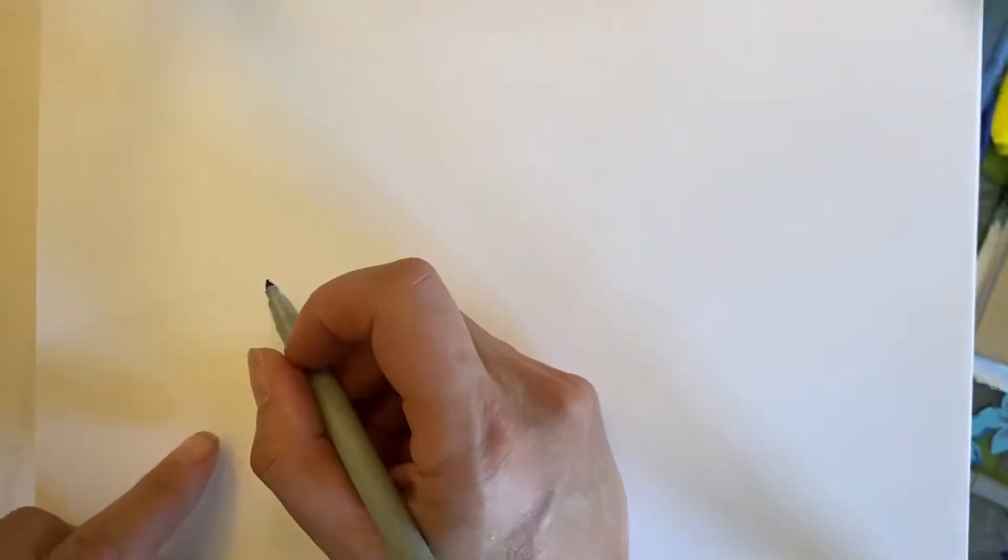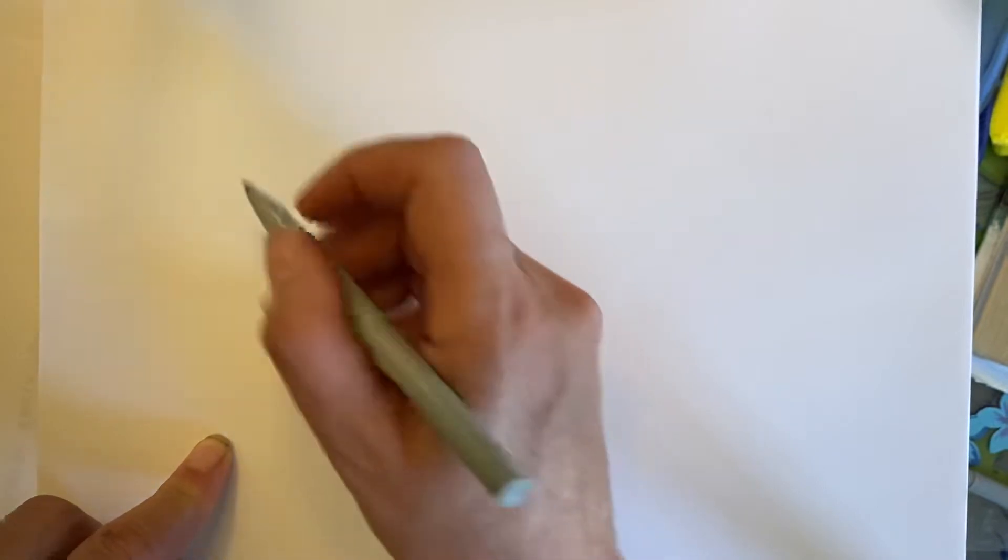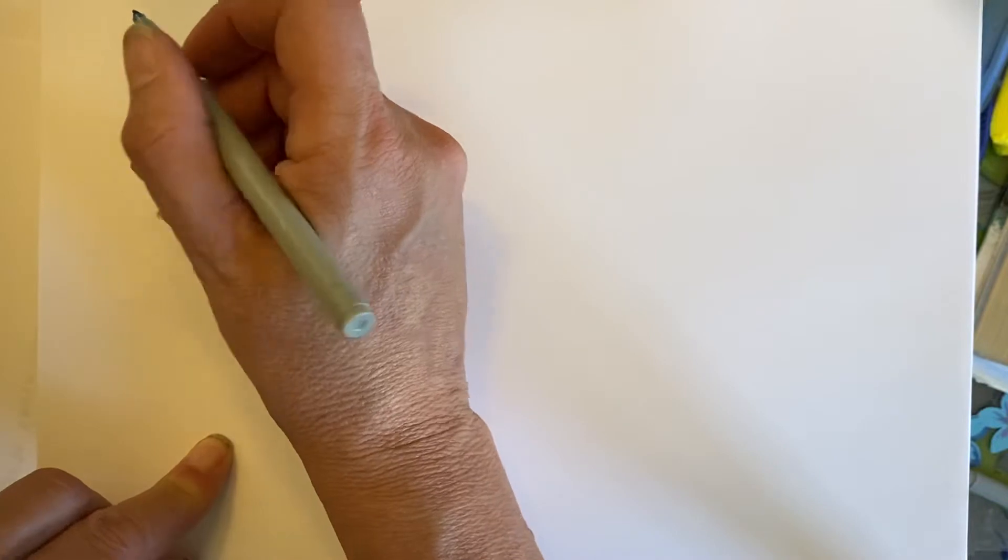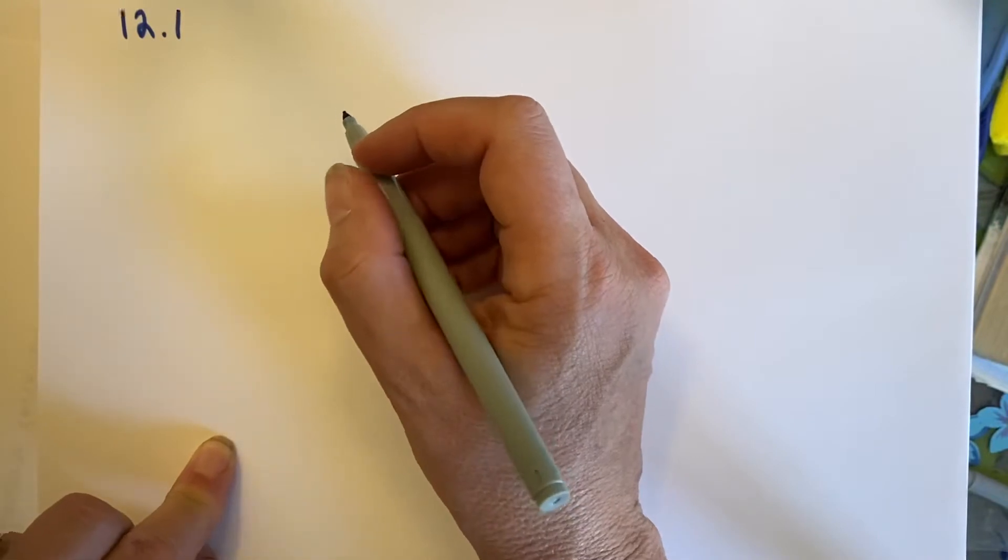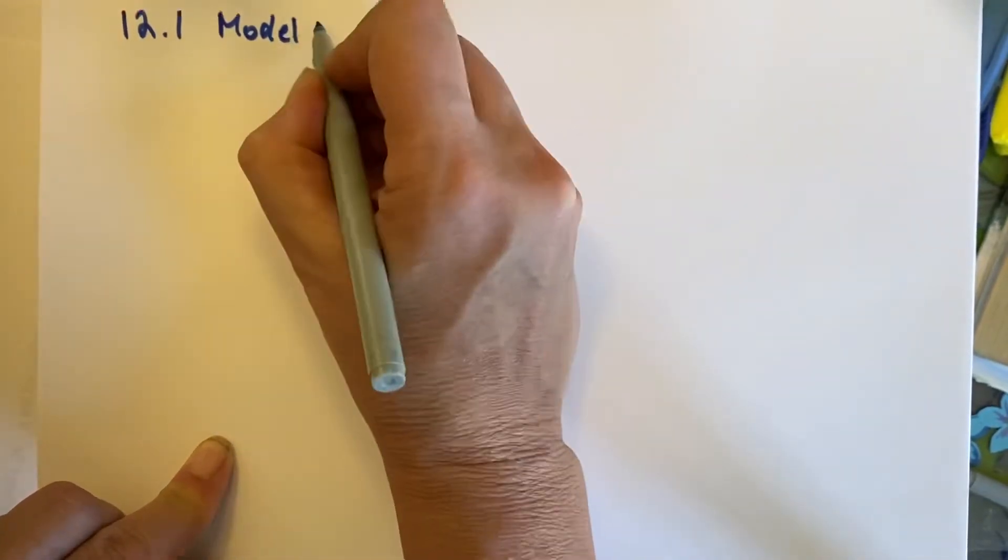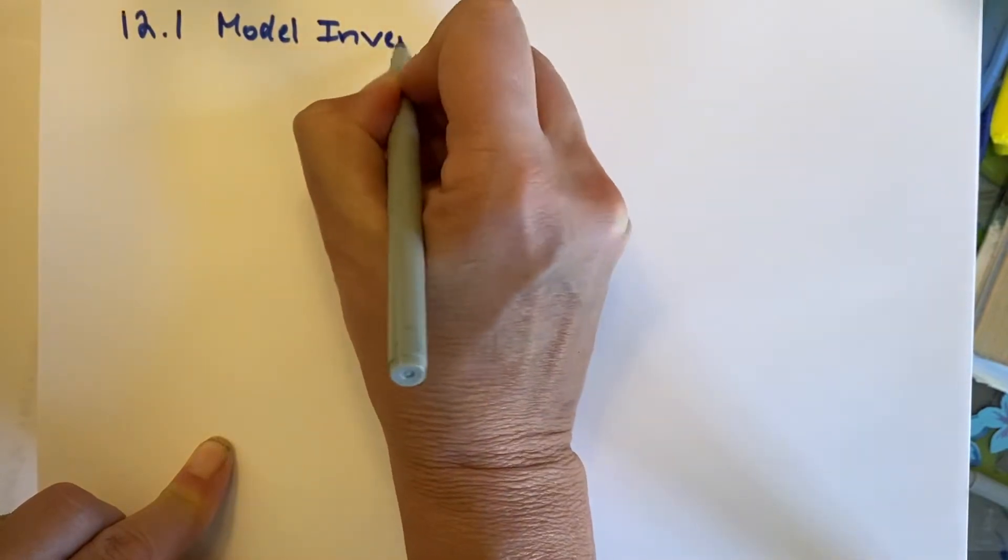Welcome to the last very big chapter of Algebra 1, and this chapter is called Rational Functions and Equations. Today we're going to start with the first section, which is two days, called Model Inverse Variation.